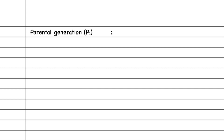To write the monohybrid cross, we will take a fresh page. First of all, we will write the parental generation P1. We will consider one plant as male and the other as female. Then we will go to the phenotype — the external characteristic or external appearance of the plant. We will consider the male plant as the tall plant and the female plant as the dwarf plant.